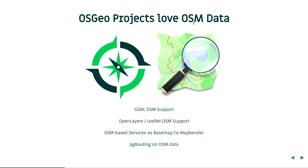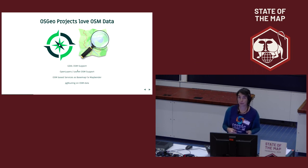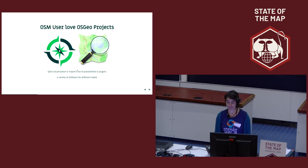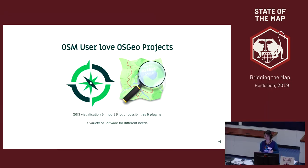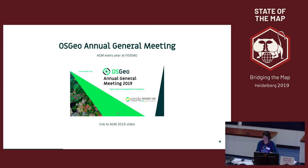Many of these projects love OSM because with OpenStreetMap we have the possibility to easily get data and use it in our software projects. A lot of them have already integrated OpenStreetMap. For example, OpenLayers and Leaflet have support for OpenStreetMap services. We have OSM-based services as base maps, for example for MapBender. We have desktop GIS QGIS, which can load OSM data via a library that supports OSM. And if you are interested in routing, pgRouting enables routing on OpenStreetMap data. So we love OpenStreetMap and OSM users love OSGEO projects as well.